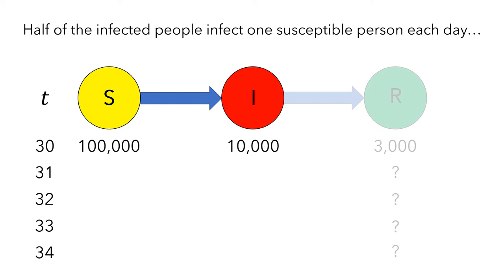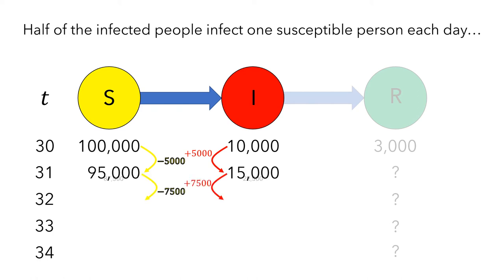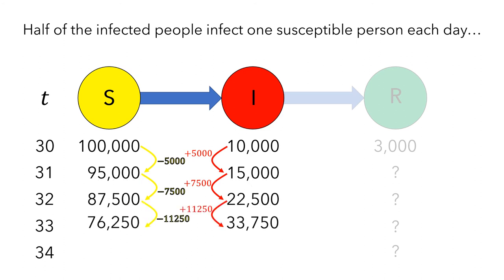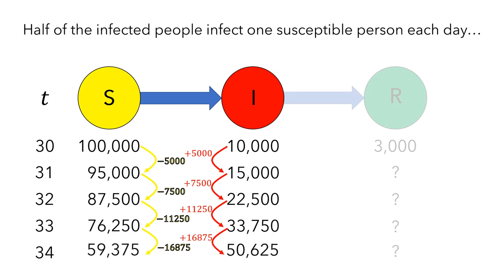On day 30, there are 10,000 infected people. If half of them infect a susceptible person, then the number of infected people will increase by 5,000 and the number of susceptible people will decrease by 5,000. On the next day, there are 15,000 infected people, so half, or 7,500, will infect a susceptible person. If we continue doing this, we'll end up with 50,625 infected people and 59,375 susceptible people.